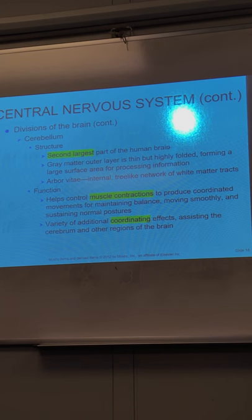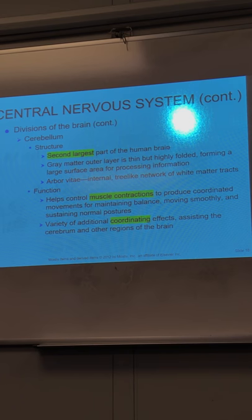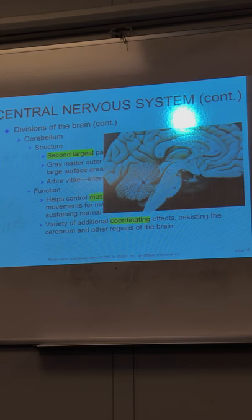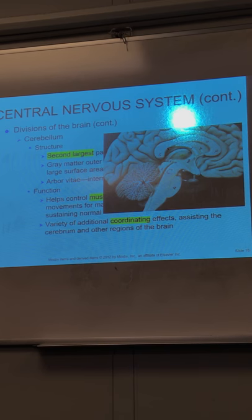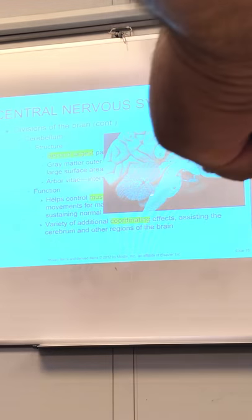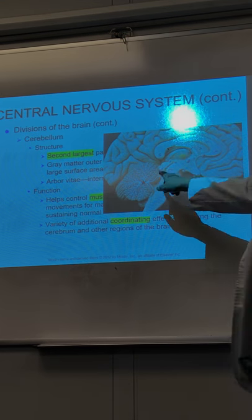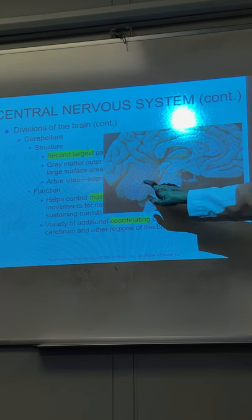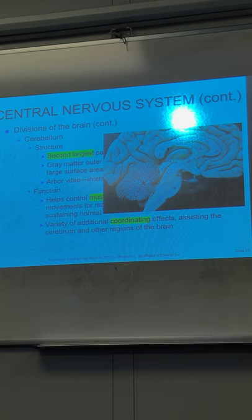The cerebellum is the second largest part of the human brain. The arbor vitae in the cerebellum appears white because it is a network of white matter — myelinated axons. The cerebellum controls muscle contractions, maintains balance, stability, and smooth movement. If there is a cerebellar problem, the patient will experience ataxia and be prone to falls due to poor coordination.